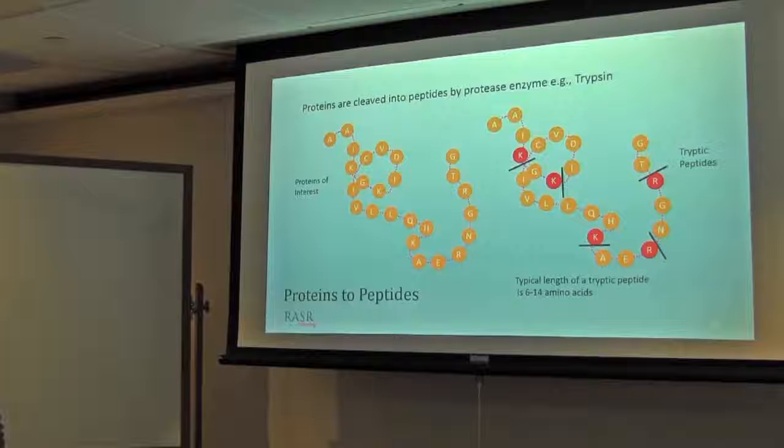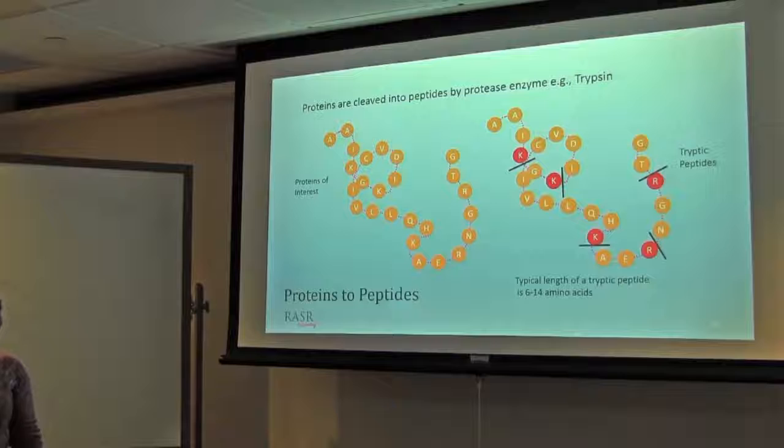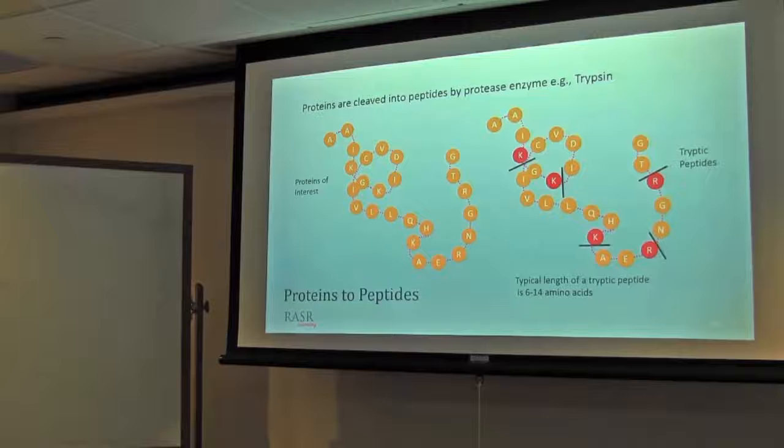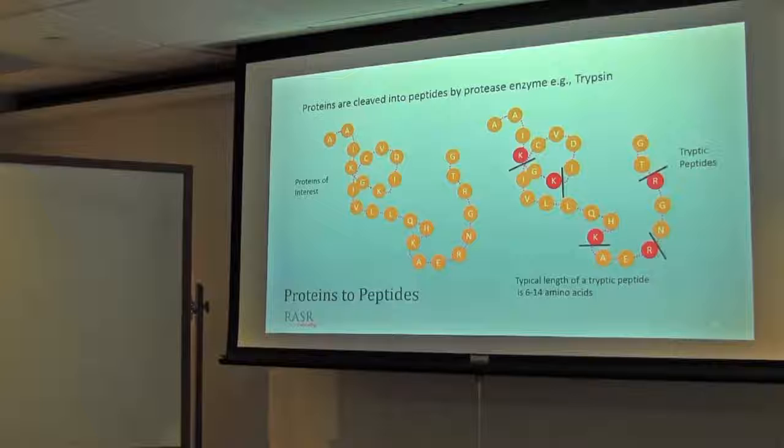Bottom-up approach, we are converting protein into peptide. Most common proteolytic enzyme we are using is trypsin, which has a specific cleavage activity, always selectively cleaving at the carboxy end of lysine and arginine. The only exception is if proline is the next amino acid, then of course trypsin doesn't work.